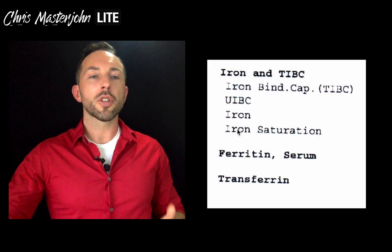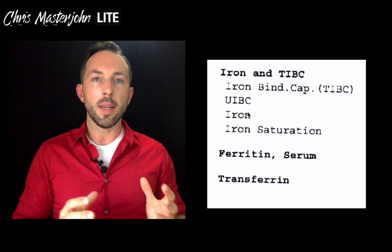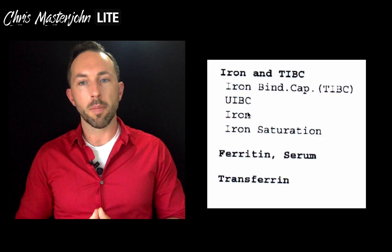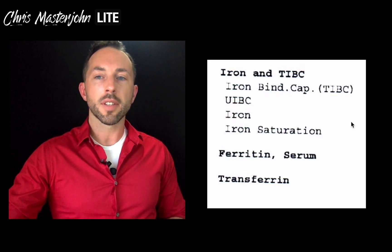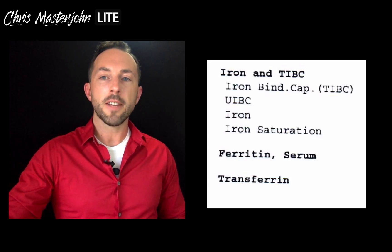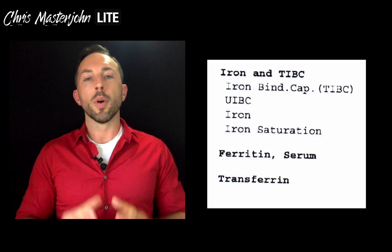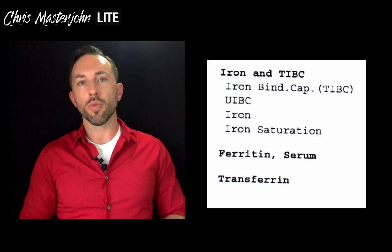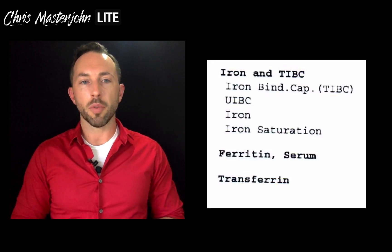What we want is for the transferrin saturation to be between 30 and 40 percent. The reference range they give for iron saturation is broader — 15 to 55 percent — but when we're looking for an optimal range, 30 to 40 percent is the optimal range.